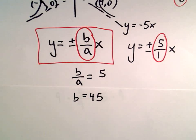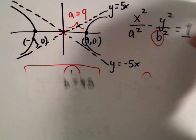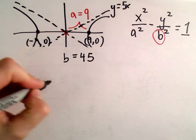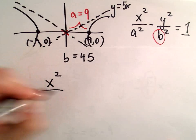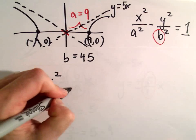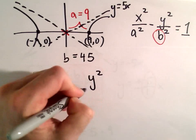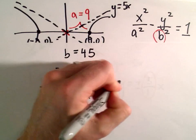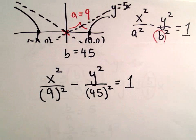And now we've got everything that we need. So our equation is going to be x squared over a squared. We said a was equal to 9 minus y squared over b squared. Again, b was equal to 45. If we square that, set that equal to 1.